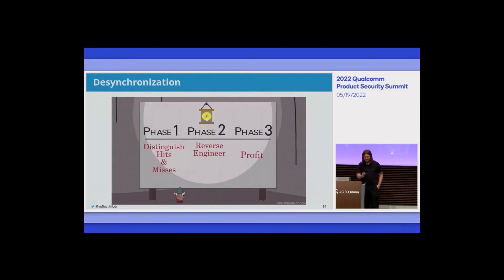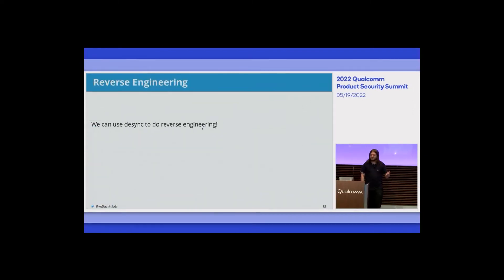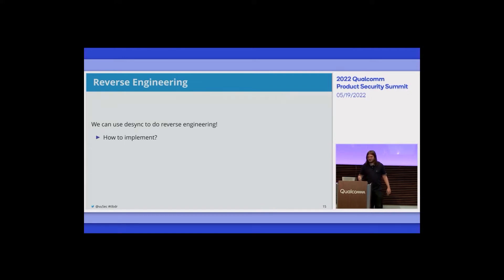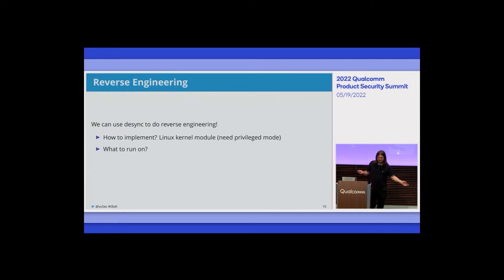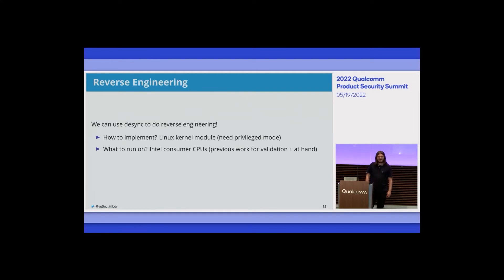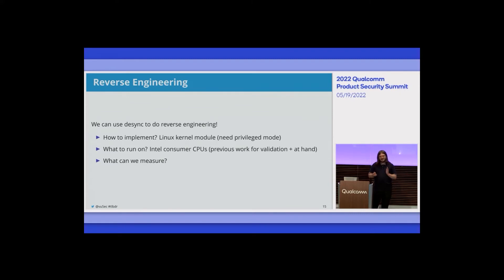So we have the primitive — what do we actually use it for? For reverse engineering. A couple of questions we faced: how do we implement this? We have to modify page tables, which is a privileged operation, so we made a Linux kernel module. What do we run on? We grabbed the most convenient hardware around our office — Intel consumer CPUs. There was also another reason: there was already previous reverse engineering work on Intel TLBs that we can use to validate our results.